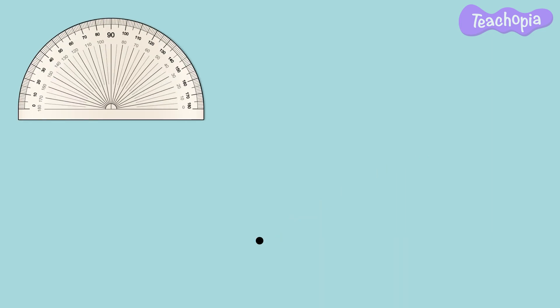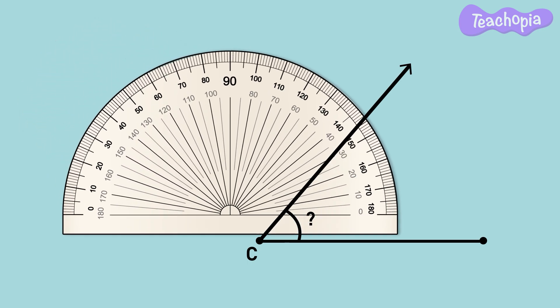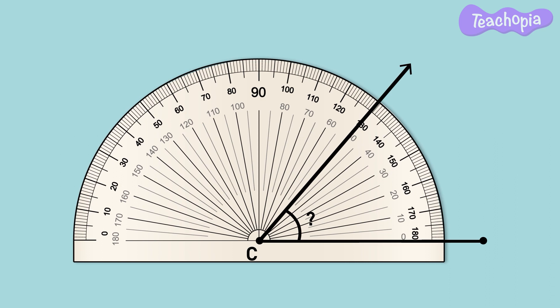A protractor can also be used to measure any random angle given to us. Let us use our protractor to find the mystery angle C. Keep the protractor center point at C and align the reference line of the protractor with one arm of the angle. Check the marking at the other arm of the angle. Here the other arm passes through the 50 degree mark on our protractor. Hence the mystery angle is 50 degrees.